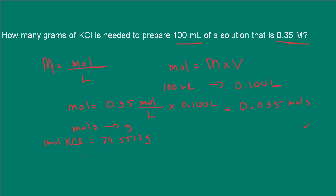So we're all set here. So we have 0.035 moles of KCl, and we know that 1 mole is equal to 74.5513 grams. And this gives us 2.61 grams of KCl.